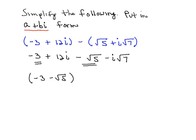And then for the imaginary terms, which would be 12i and minus i times the square root of 7, you'll note that the coefficients are not like terms that we can combine. So the best we can do is factor the i out of both of those terms, and we'll then have 12 minus the square root of 7 multiplied by i.